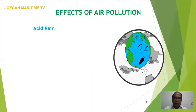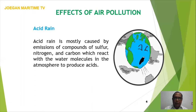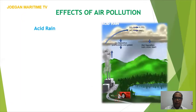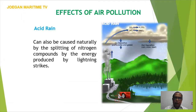Effects of air pollution: Acid rain is mostly caused by emissions of compounds of sulfur, nitrogen, and carbon, which react with the water molecules in the atmosphere to produce acids. It can also be caused naturally by the splitting of nitrogen compounds by the energy produced by lightning strikes.